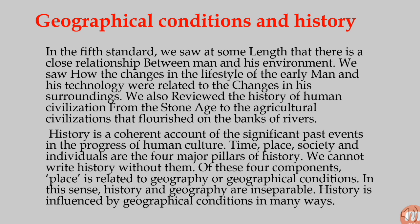History is a coherent account of the significant past events in the progress of human culture. Time, place, society, and individuals are the four major pillars of history. Of these four components, place is related to geography or geographical conditions — in this sense, history and geography are inseparable. Geographic conditions means the natural physical environment of the country inhabited, including aspects of soil, water supply, mineral resources, flora, fauna, and topography.